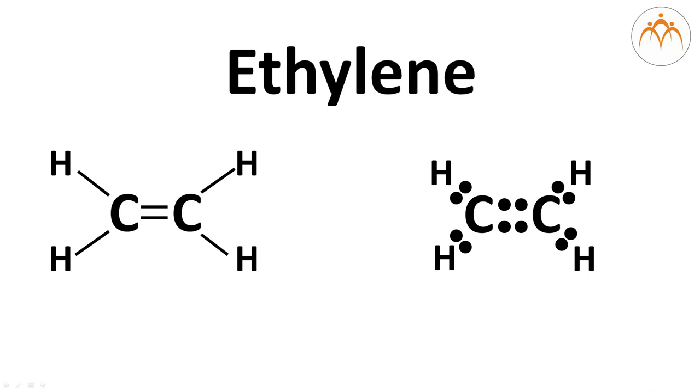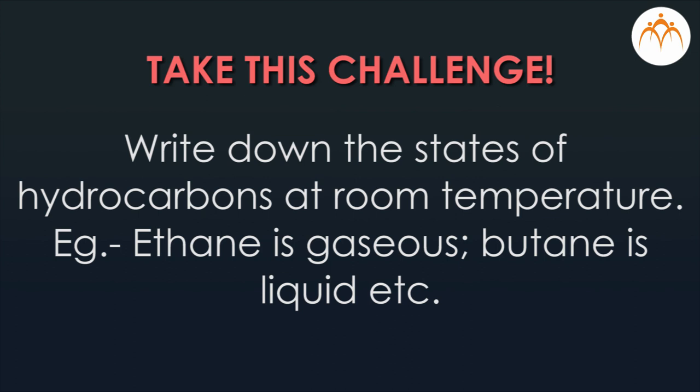If I have to look at the electron dot structure from the line structure, it is quite easy. Each of the carbon carbon bonds is going to be formed with 2 electrons each. Carbon and carbon have a double bond. They will have 4 electrons between carbon and carbon. Each of the carbon hydrogen bonds is a single bond. There are 2 electrons in there.